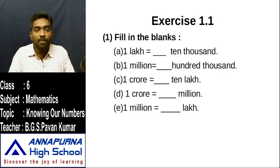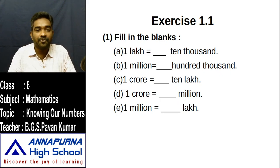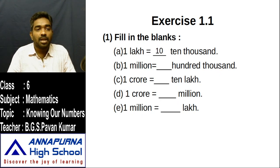First question: one lakh is equal to how many ten-thousands? In one lakh, how many zeros are there? Five zeros. In ten-thousands, how many zeros are there? Four zeros. The difference between the number of zeros is one. Put one before the zero, that is ten. So one lakh is equal to ten ten-thousands.